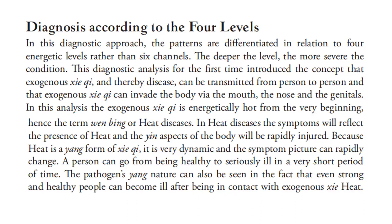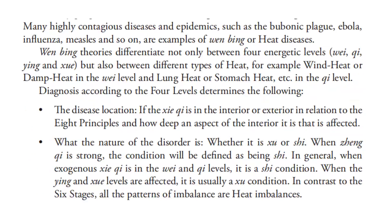Because heat is a yang form of pathogenic qi, it is very dynamic and a person can go from healthy to seriously ill in a very short period of time. Even strong and healthy people can become ill after contact with exogenous pathogenic heat. Many highly contagious diseases and epidemics such as the bubonic plague, Ebola, influenza, and measles are examples of wen bing or heat diseases. Wen bing differentiates not only between four energetic levels - wei, qi, yin, and blood - but also between different types of heat, such as wind heat or damp heat in the wei level, and lung heat or stomach heat in the qi level.